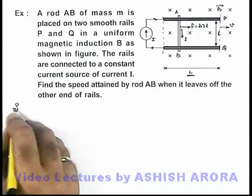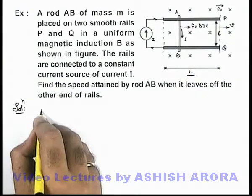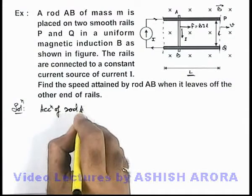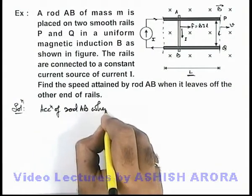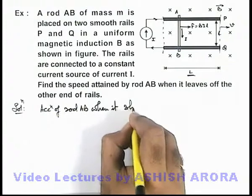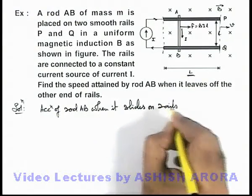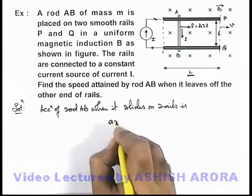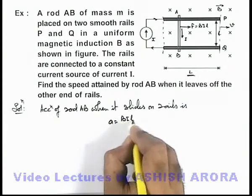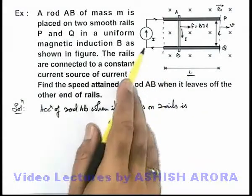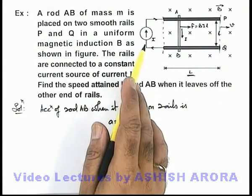So here we can write: acceleration of rod AB when it slides on rails is this acceleration we can write as B·I·L upon m, because it will experience a constant force because there is a constant current source over here.